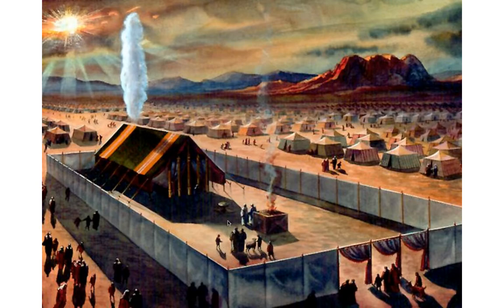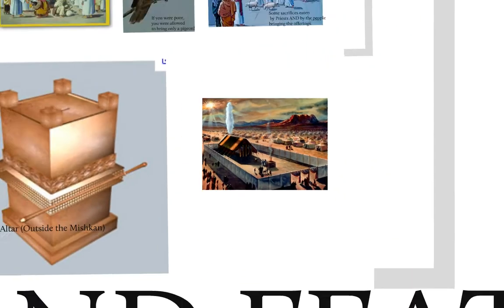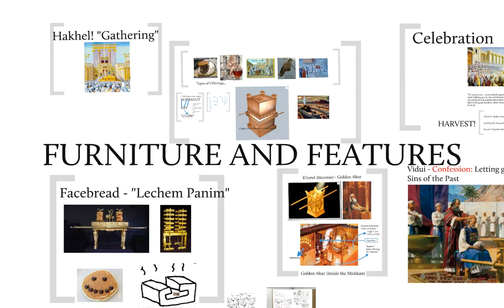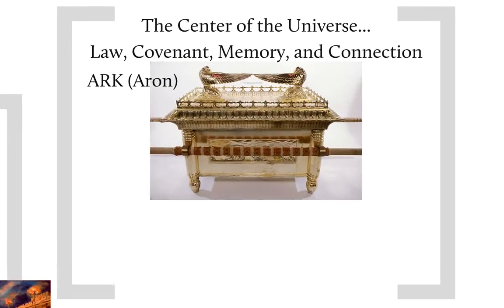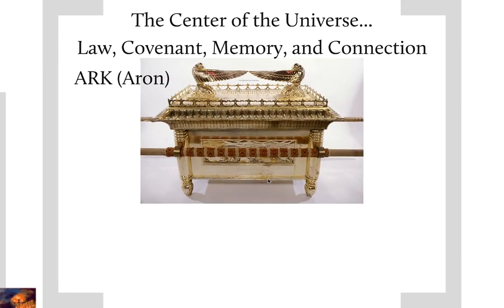There's the final view, just to make sure it's in your head — that's the structure of the Mishkan. Now let's talk about the furniture and features. The most important item is the Ark of the Covenant. It's really, in some ways, the center of the universe while the Israelites are making their way through the desert and until Jerusalem comes along — and maybe even when Jerusalem comes along.